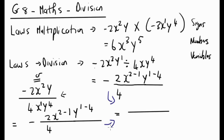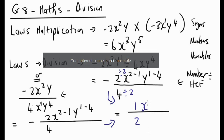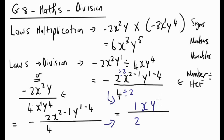From either form of the expression, the next step is to simplify the numbers by dividing by the highest common factor. The highest common factor of 2 and 4 is 2, so 2 divided by 2 is 1 and 4 divided by 2 is 2. Then x to the power of 2 minus 1 equals 1, so we just write x, and y to the power of 1 minus 4 gives y to the power of negative 3.